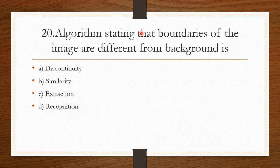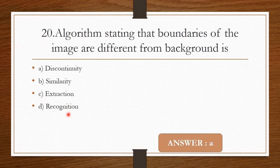Question 19: An algorithm stating that boundaries of the image are different from the background is — Option A: Discontinuity. Option B: Similarity. Option C: Extraction. Option D: Recognition. The correct answer is Option A — Discontinuity.